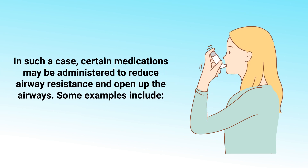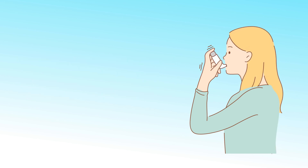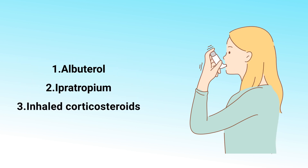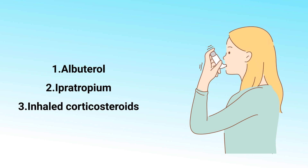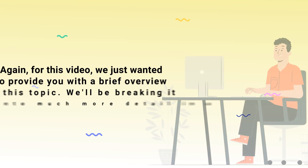In such a case, certain medications may be administered to reduce airway resistance and open up the airways. Some examples include albuterol or other short-acting beta-2 agonists, ipratropium or other anticholinergic agents, and inhaled corticosteroids, which typically help to prevent episodes from occurring.